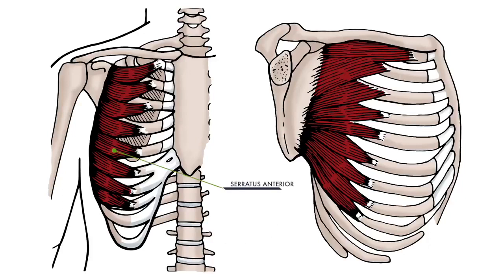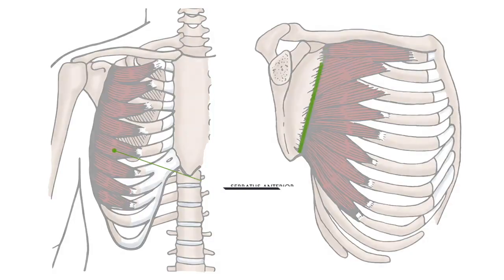The serratus anterior connects to the ribs and also the vertebral border of the same part of the shoulder blade. So let's work these simultaneously.